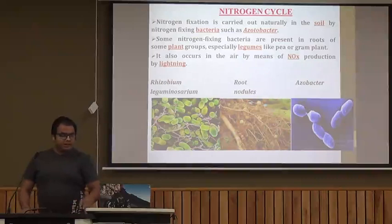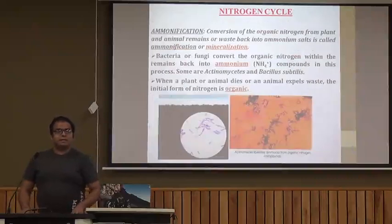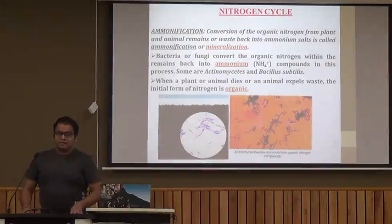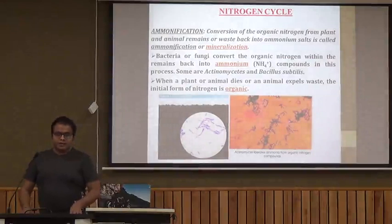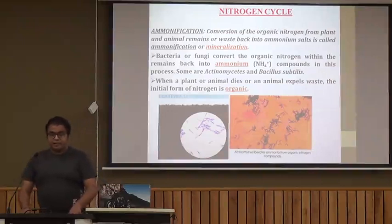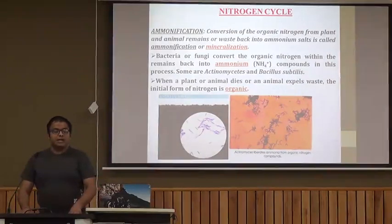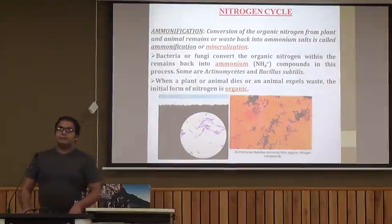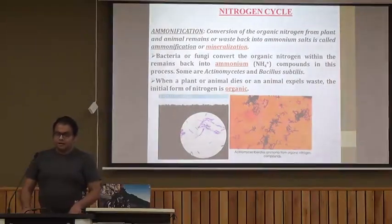Next is ammonification. In this step, the organic nitrogen from plant and animal remains or waste turns back into ammonium salts — this is called ammonification or mineralization. It involves bacteria and fungi which convert organic nitrogen within remains into ammonium compounds, especially Actinomycetes and Bacillus subtilis, although many others are also involved. When a plant or animal dies or expels waste, the initial form of nitrogen is organic, obtained from the life form.